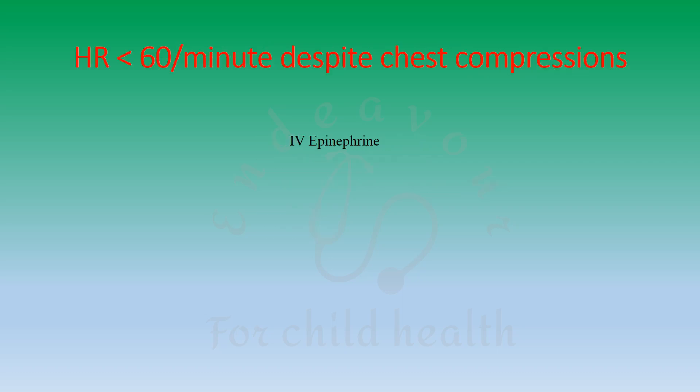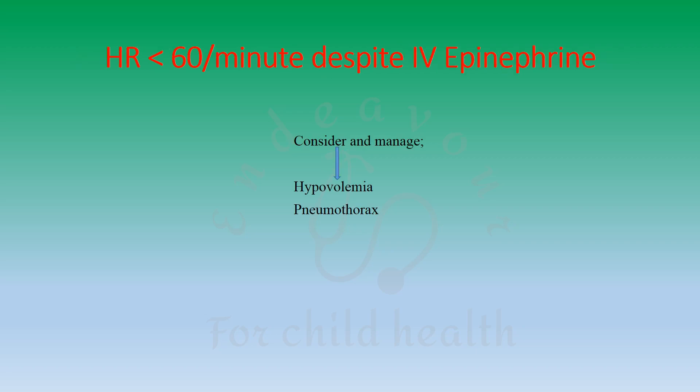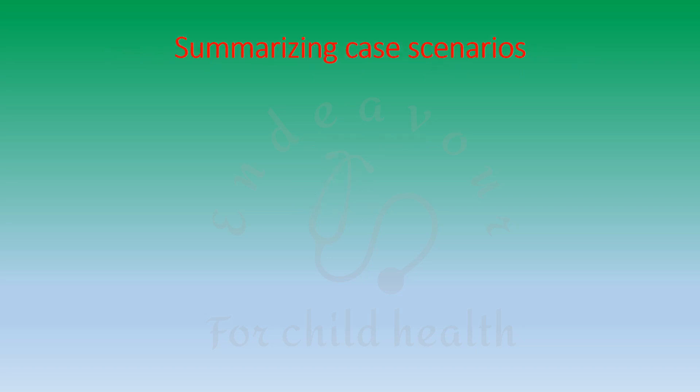However, if the heart rate is still less than 60 beats per minute despite effective chest compressions, coordinated positive pressure breaths, and 100% oxygen, you must administer IV epinephrine. If despite adequate dose and frequency of IV epinephrine the heart rate remains less than 60 beats per minute, consider and rule out the possibilities of hypovolemia and pneumothorax, and manage accordingly.